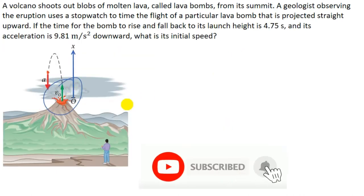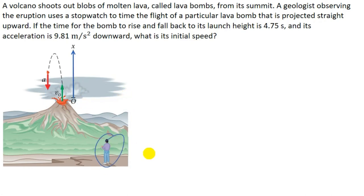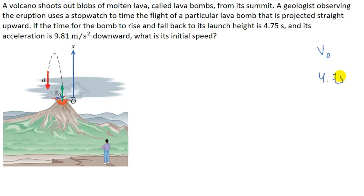Next, a volcano shoots out blobs of molten lava, and a geologist wants to calculate the initial speed v-naught of a particular lava bomb. He uses a stopwatch and notes the time of flight for the lava bomb to rise up and return to its initial height is 4.75 seconds. We have to calculate the initial speed v-naught.